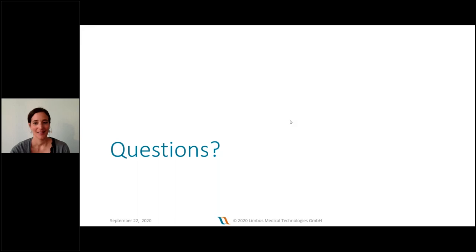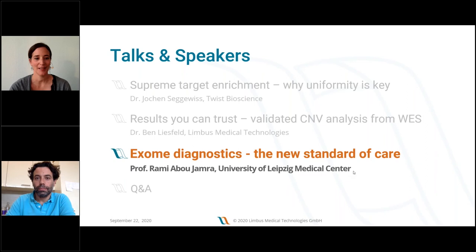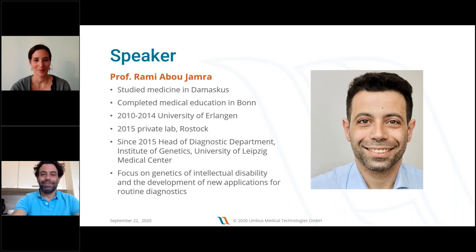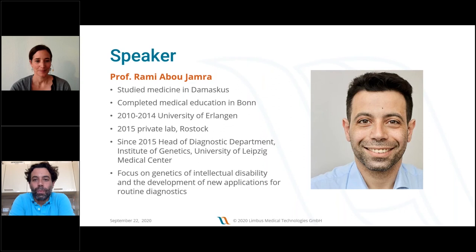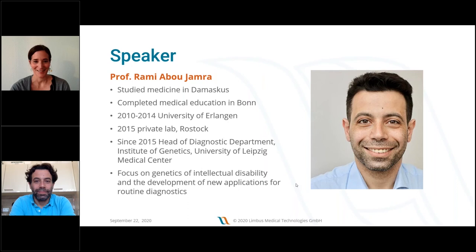I would like to introduce the third part of our webinar: 'Exome Diagnostics — The New Standard of Care,' with Professor Rami Abu-Jamra from the University of Leipzig Medical Center. Rami studied medicine in Damascus, completed his medical education in Bonn, and gained further scientific and clinical experience in Erlangen and Rostock. Since 2015, he has been head of the diagnostic department at the Institute of Genetics, University of Leipzig Medical Center. His focus is on genetics of intellectual disability and development of new applications for routine diagnostics, and today he will show some nice clinical cases, showing how he uses the Twist exome and the Varvis software.